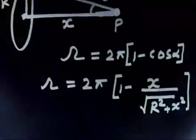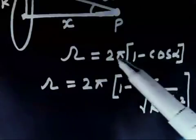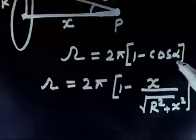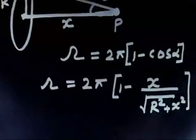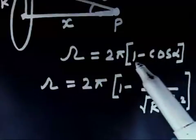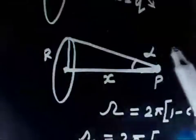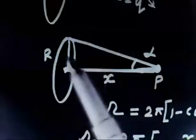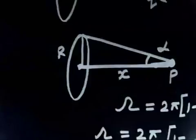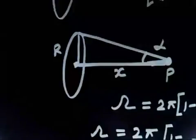You can always verify: if alpha is 0, then cosα = 1, so solid angle is 0. If cosα = -1, that is alpha = π, solid angle is 4π, because 2π(1 - (-1)) = 4π. So when alpha becomes π, the whole sphere is covered — that is why in that case solid angle is 4π. Remember this result: solid angle subtended by a circular area at point P is 2π(1 - cosα).